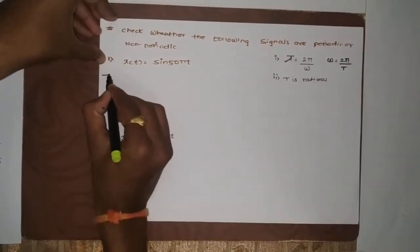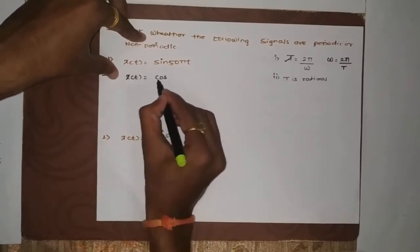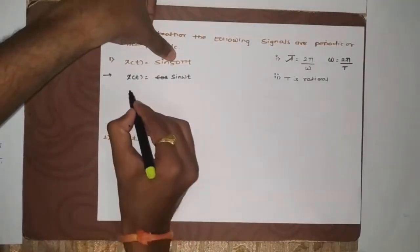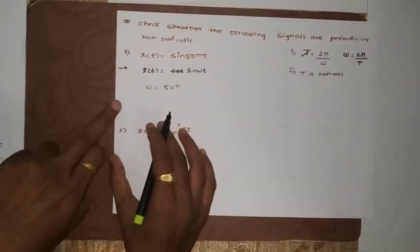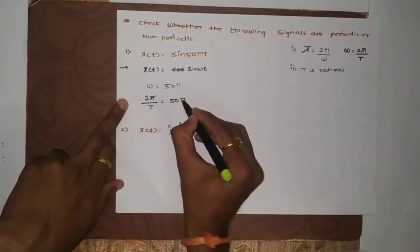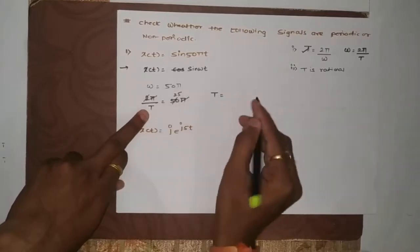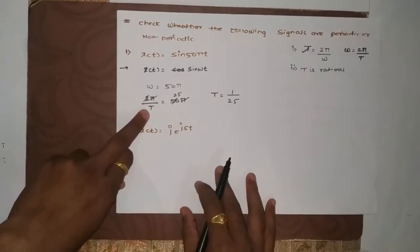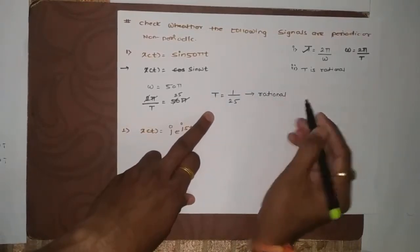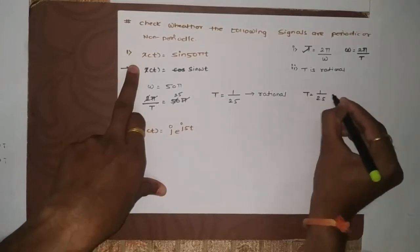Let us see this example: x of t equals sine of 50πt. To find the total time period, we compare this with the standard form sine(ωt), giving us ω = 50π. Replacing ω with 2π/T: 2π/T = 50π, so the π cancels and we get T = 1/25. The numerator is 1 and denominator is 25 — both integers, so this is a rational number, and the given signal is periodic with period 1/25 seconds.